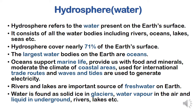Hydrosphere means water. Our lithosphere is 29% of the earth, and hydrosphere is nearly 71%. Hydrosphere refers to the water present on the earth's surface — whether in the form of ocean, river, lake, or sea. Whether it is salty water or fresh water, rain water — any form of water — that is hydrosphere. It consists of all water bodies including rivers, oceans, lakes, seas, etc.